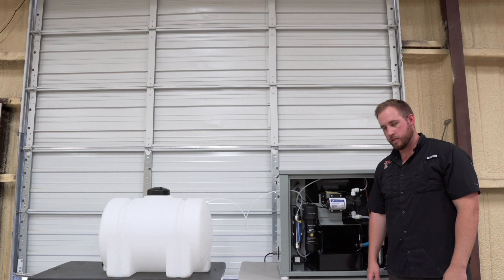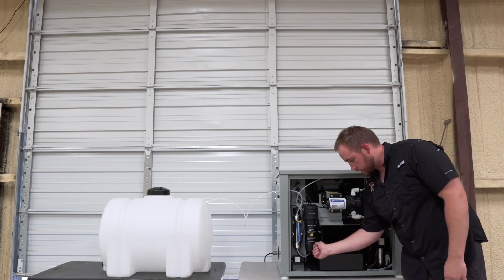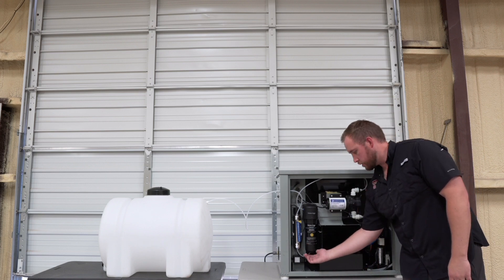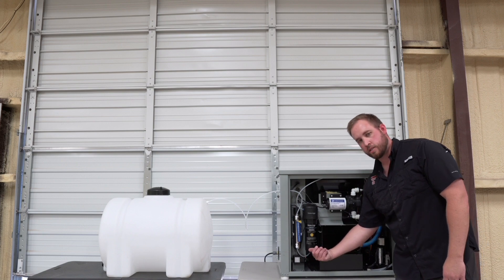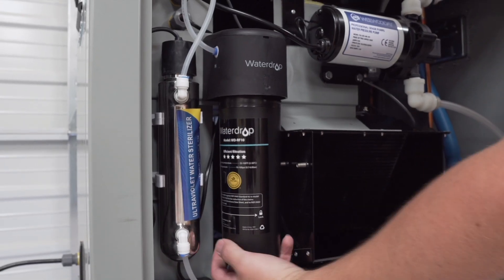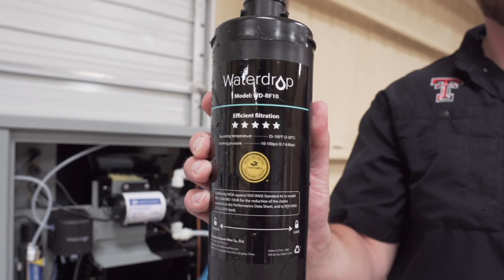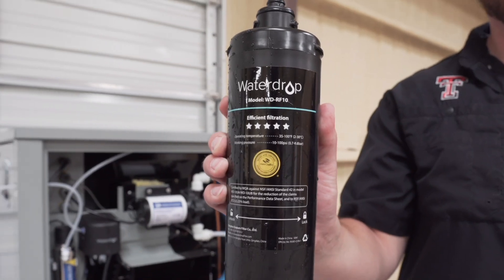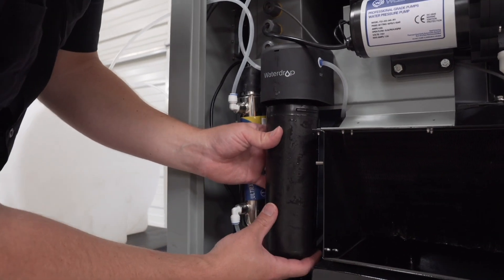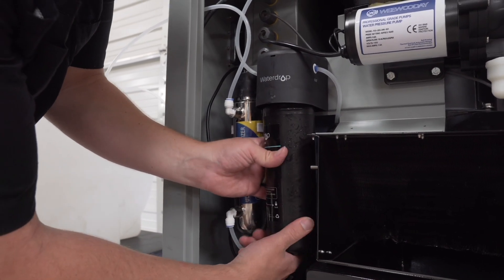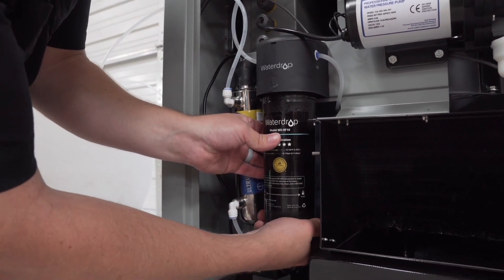So these are very easy to change. There's an unlock and lock signal on the actual filter. So you're just going to turn it based on which direction the filter tells you to turn it. It's going to pop down. The whole cartridge actually gets changed. So you'll throw that cartridge away, and then also you'll just take the new cartridge, put it in, screw it in, and then you're done.